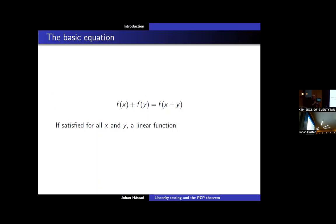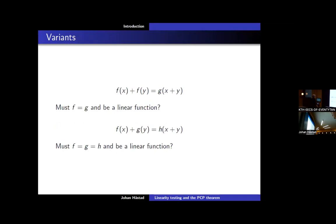I was told to have one equation, so I decided on this: you're somewhere in the world, you take x and y, add them, and compute this linear function. The question is how we should use this equation. There's a slight variance — it might be that we don't only have one function, we might have two functions. You can think about: if f(x) + f(y) = g(x+y), does this imply f equals g and both are linear?